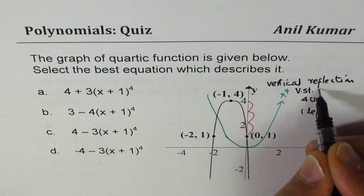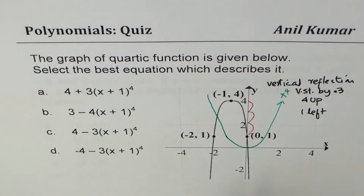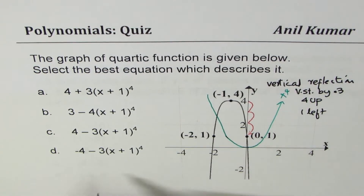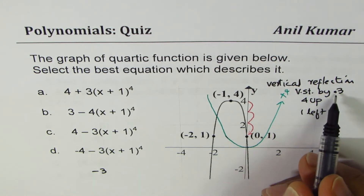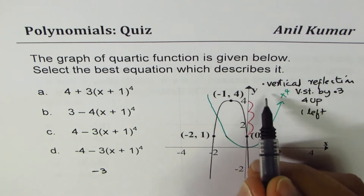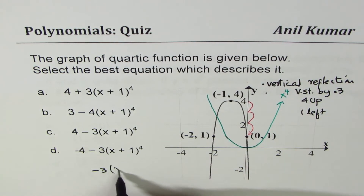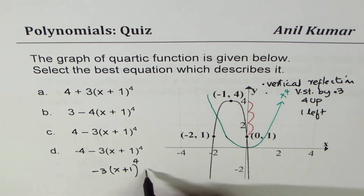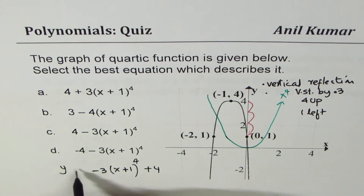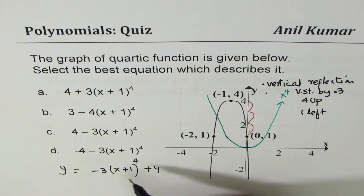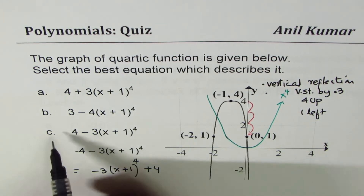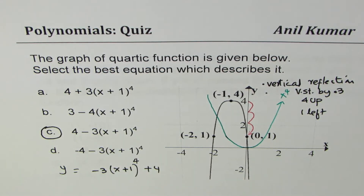So we are looking at a transformation of this quartic function: minus three for the reflection on the x-axis and stretch by three, x moving one unit left means plus one, to the power of four, and going four steps up means plus four. The equation is 4 - 3(x+1)⁴. If you try to match it, looking for four and minus three — that matches. So option C is the correct answer.